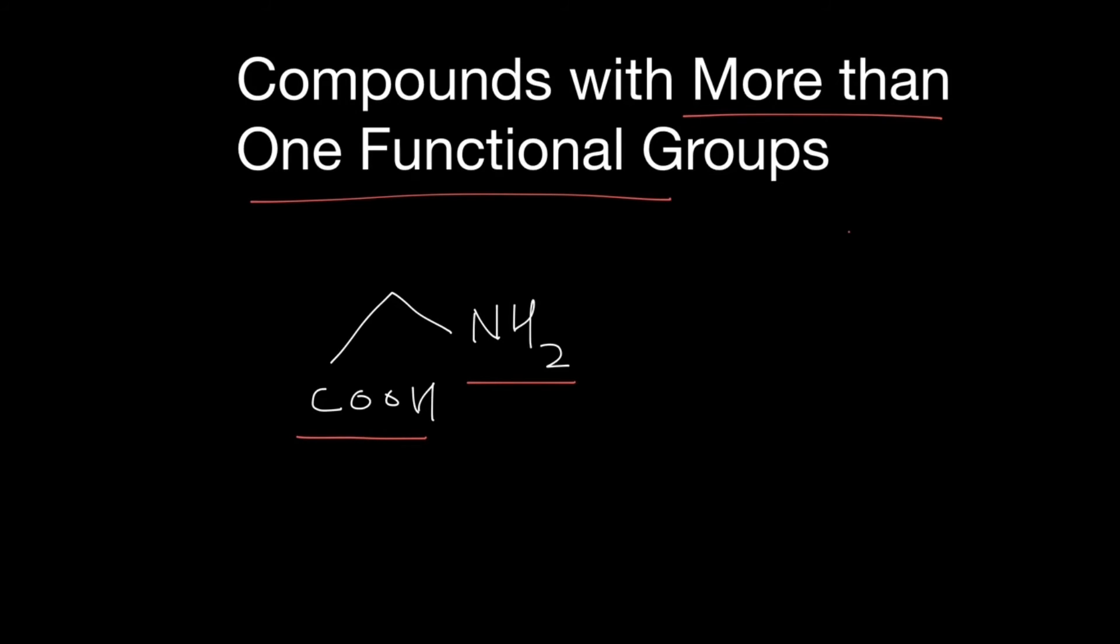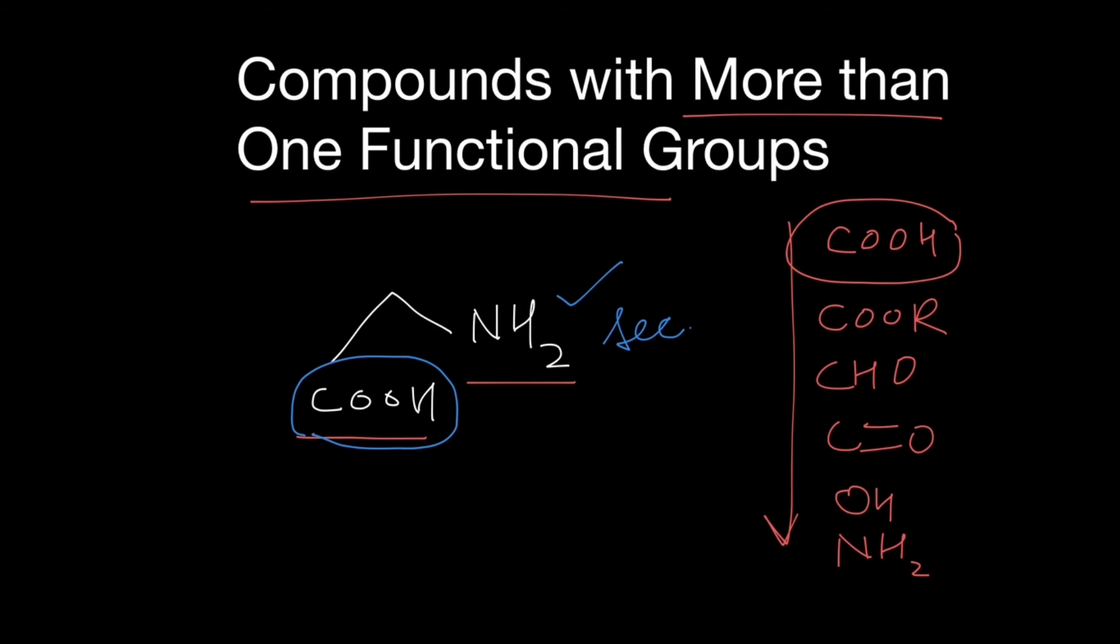Now if you remember the order that I mentioned previously, the order is COOH and finally the amine. So in this order the highest priority is given to the COOH group. Therefore our primary functional group is COOH and the amine becomes secondary. Therefore this compound will be named as an oic acid. We will not call it an amine. We will call it an oic acid.